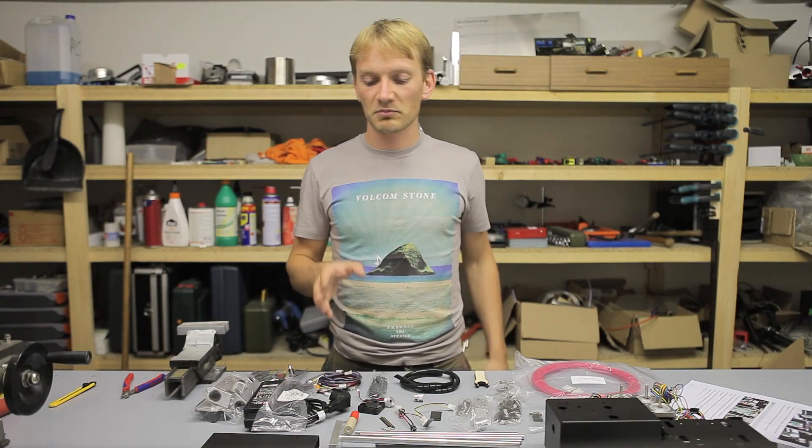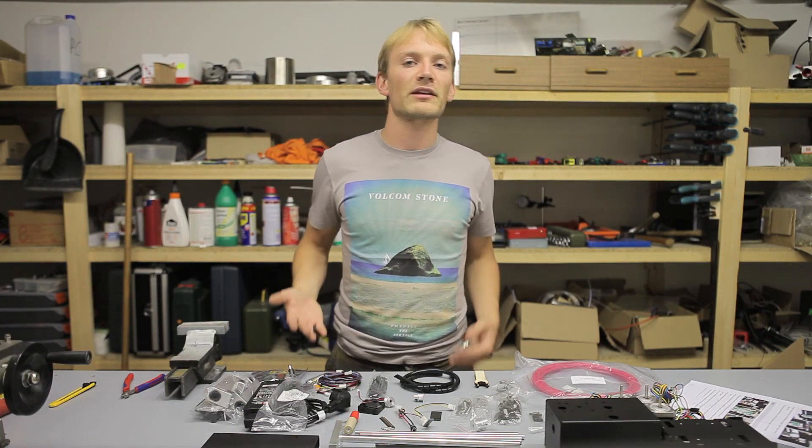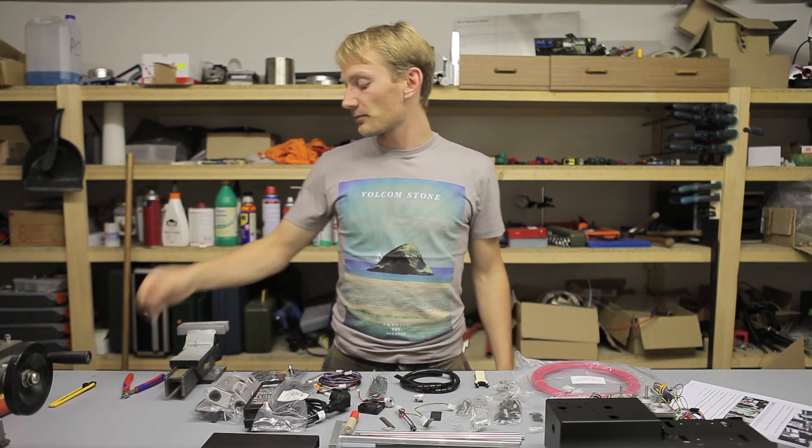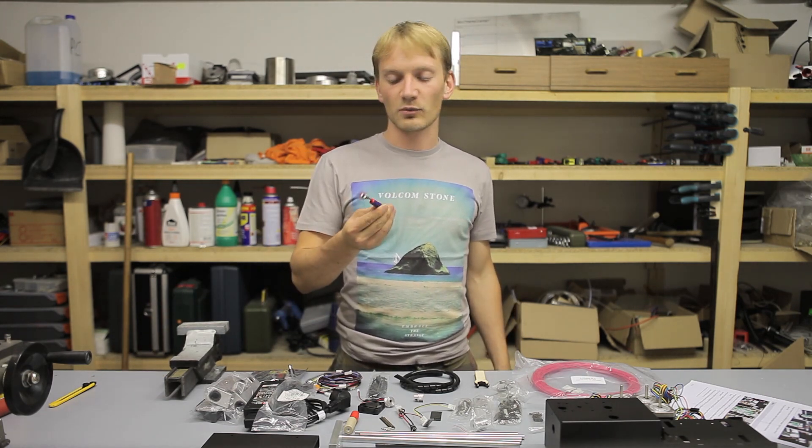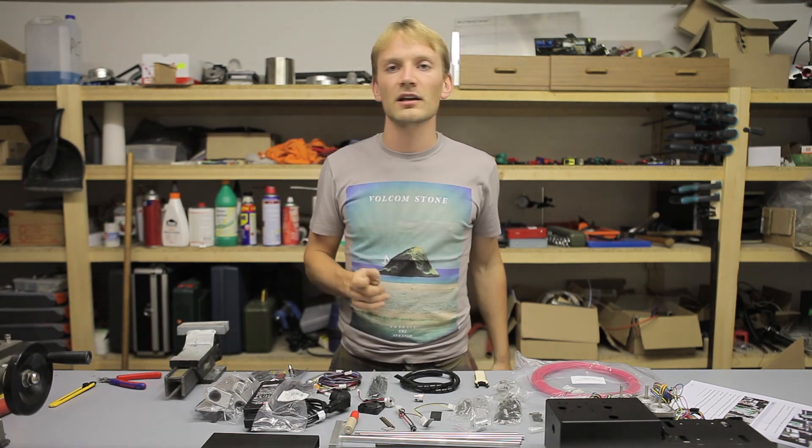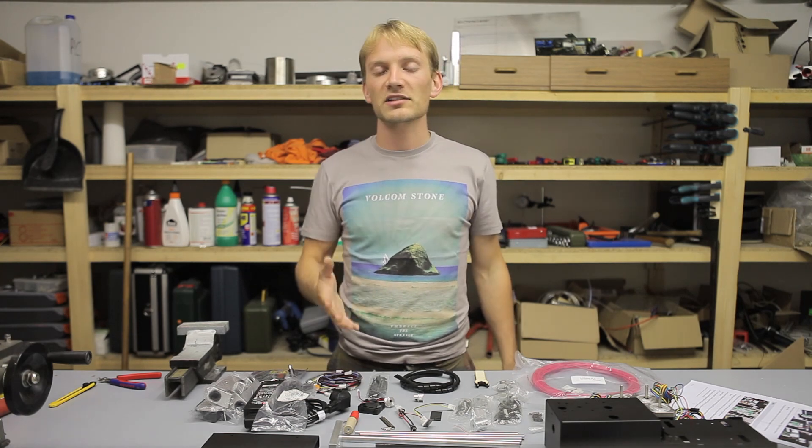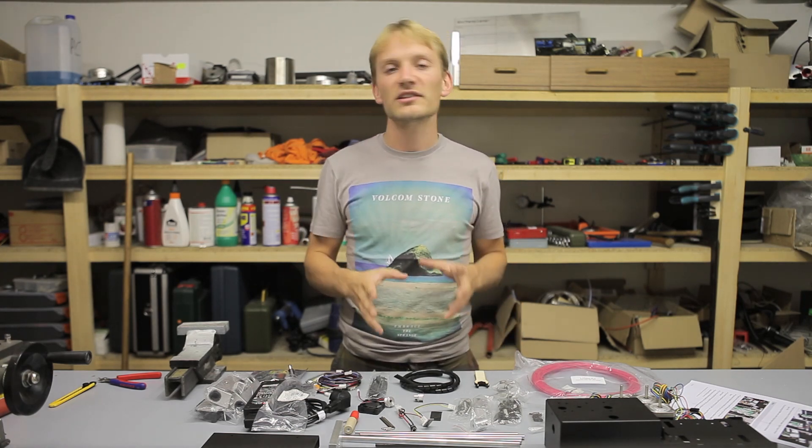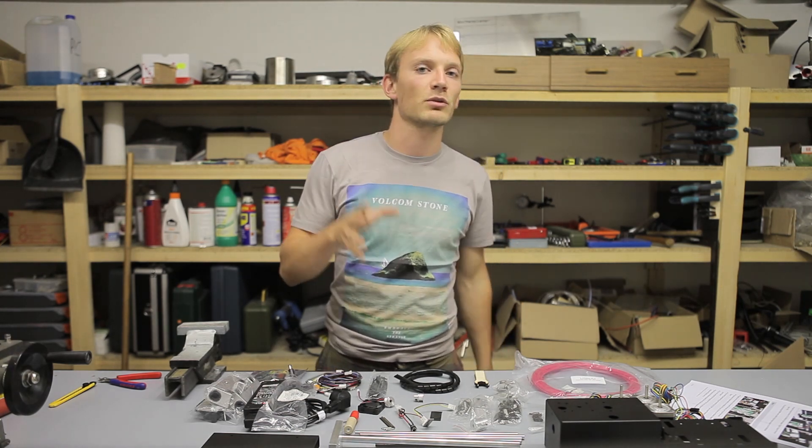So you see, the Printrbot Simple Metal Kit contains practically everything you need to build a printer. A pair of wire cutters, like small ones like these, is also recommended, but everything else is in here. So thanks for watching. In the next video we're going to look at the first steps of assembling the Printrbot Simple Metal Kit.